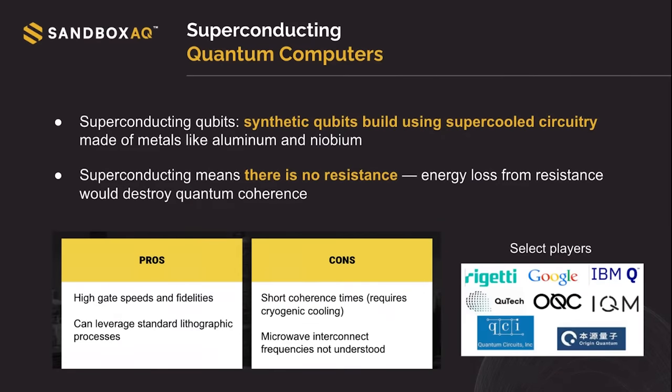That's something good about these quantum computers — they have high gate speeds and fidelities. Something bad is that they have short coherence times. Also, we need to keep them in cryogenic cooling, which is very costly. And some microwave interconnect frequencies are not understood yet. However, there are many players using this type of quantum computer, some of them very well known, as you can see in the slide.